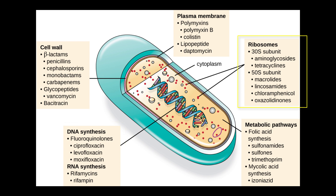The fourth target is to block protein synthesis. Prokaryotes have 70S ribosomes, and eukaryotes have 80S ribosomes. The fact that the ribosomes are different sizes makes them a good antibacterial drug target.